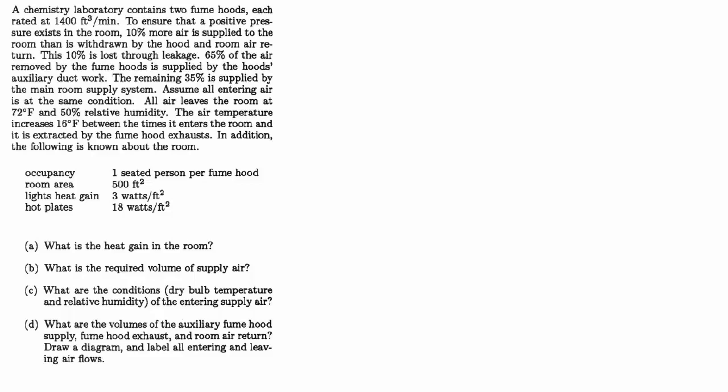The remaining 35% is supplied by the main room supply system. Assume all air entering is at the same condition. All air leaves the room at 72 degrees and 50% relative humidity. The air temperature increases 16 degrees between the time it enters the room and is extracted by the fume hood exhausts.